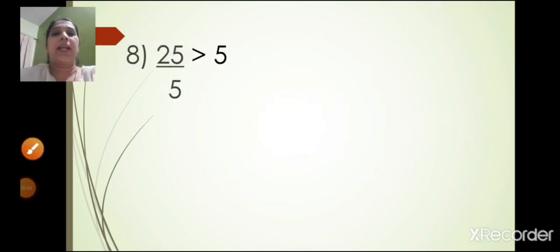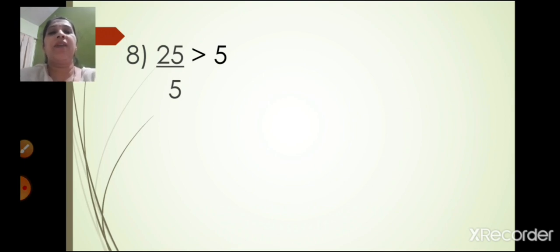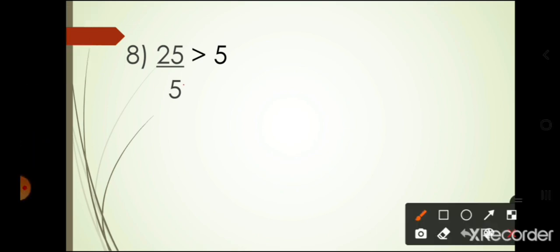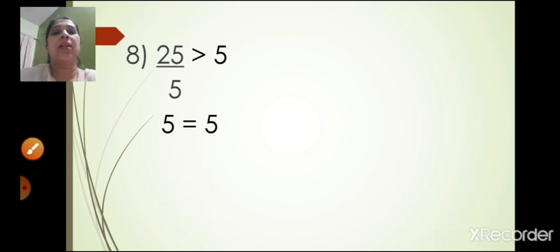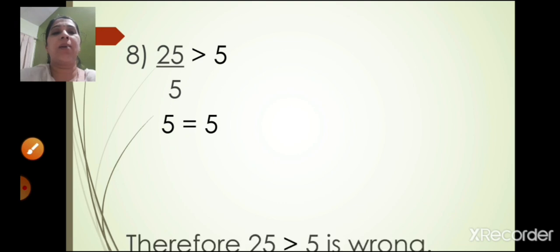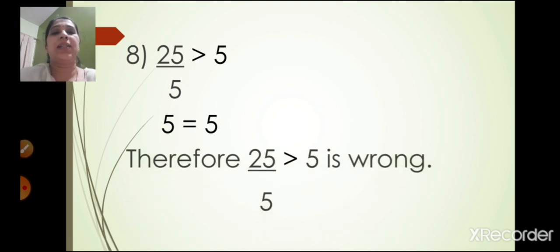The eighth one: 25 upon 5 is greater than 5. Now 25 divided by 5 — five fives are 25, so the answer is 5. Both numbers are equal: 5 is equal to 5. Therefore 25 upon 5 is greater than 5 is wrong.